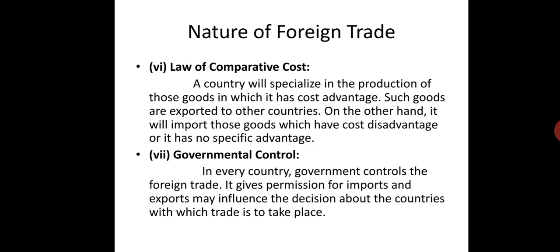Seventh is government control. In every country, the government controls foreign trade and gives permission for imports and exports, and may also influence decisions about which countries to trade with. Government has control over foreign trade — if the government decides certain products will not be imported, even if they are a raw material for your business, that import stops. Trade happens according to government rules; it is not completely in your hands. If the government restricts it, you cannot do that trade.